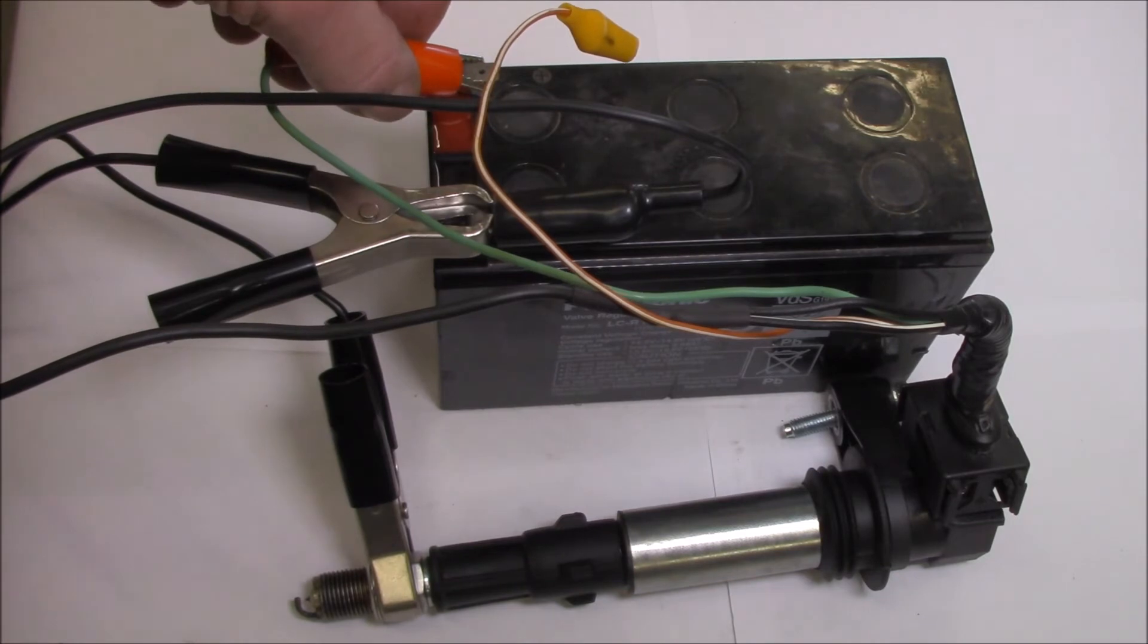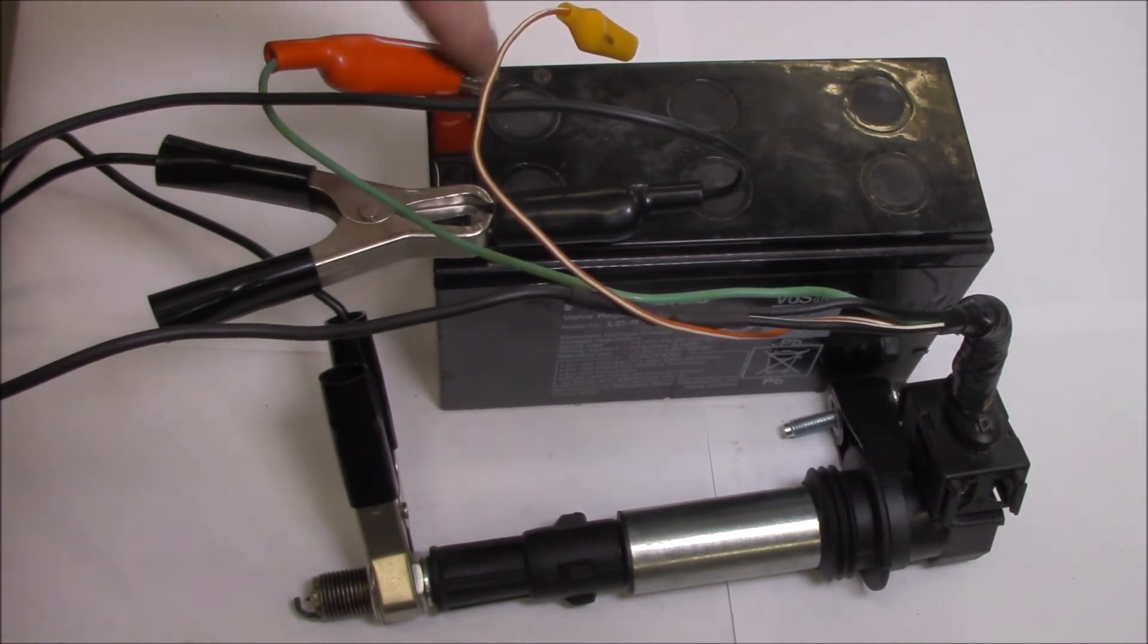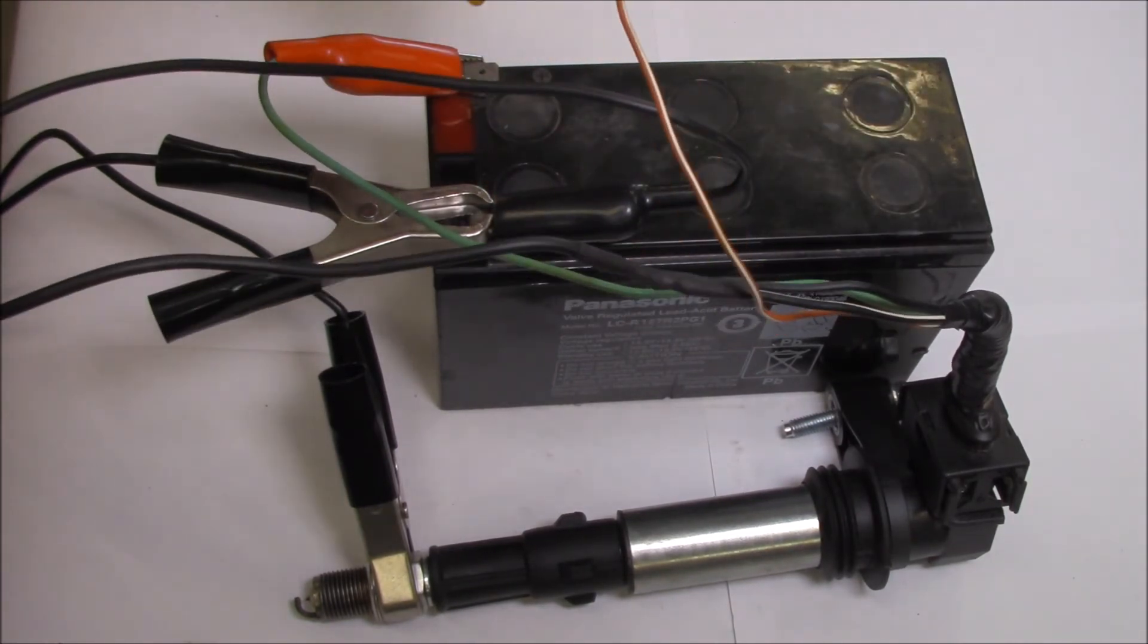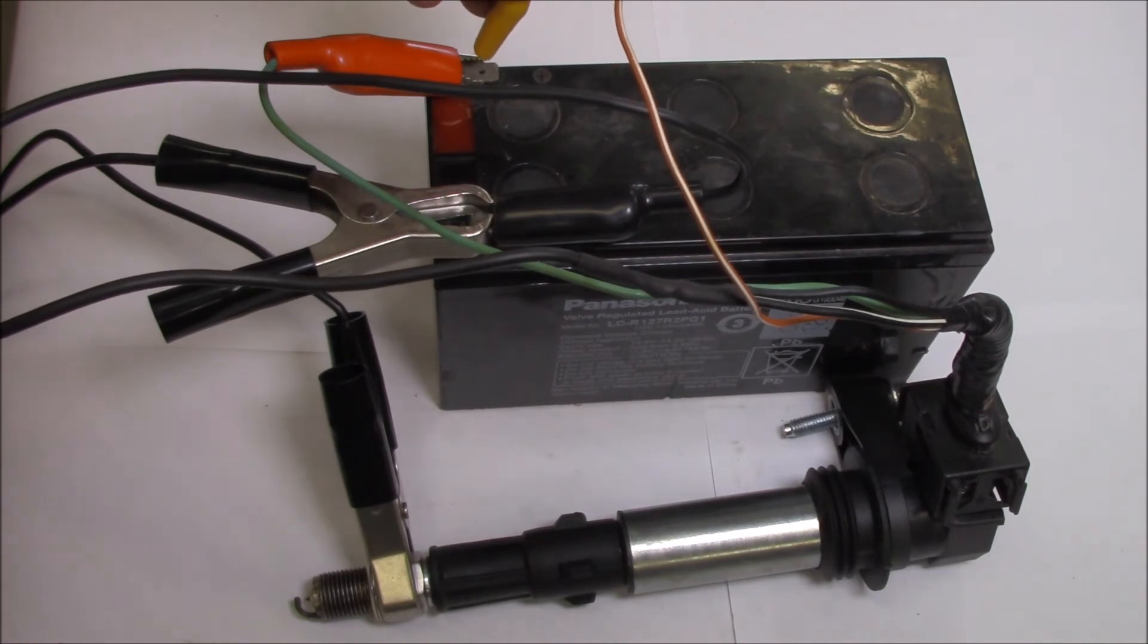And of course, our ignition supply is this green wire that goes to battery positive. Now, this is switched. Obviously, there must be a MOSFET internally. And I'm simply going to use my trigger wire across the positive side of the battery. Have a listen.